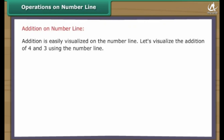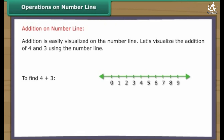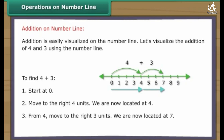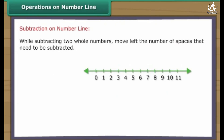Addition is easily visualized on the number line. Let's visualize the addition of four and three. To find four plus three: first, start at zero; second, move to the right four units — we are now located at four; third, from four move to the right three more units — we are now located at seven. Thus, four plus three equals seven.